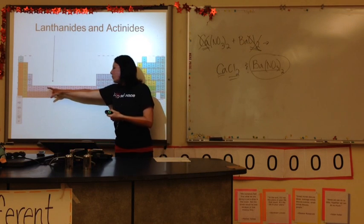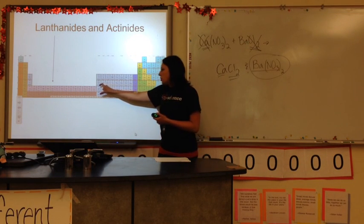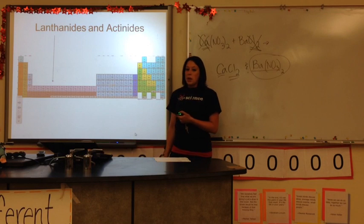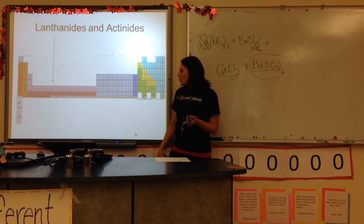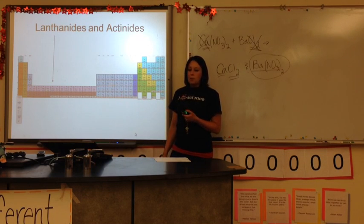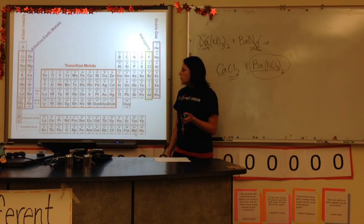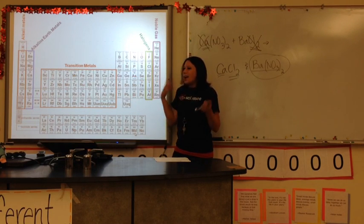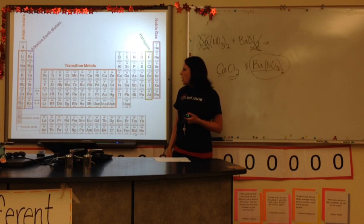Here's what the periodic table would look like if you actually inserted those two rows from the bottom into where they should be. It would take up a lot of space in classrooms across the world, so it's a lot handier to cut them out and put them on the bottom. We've talked about all the different parts besides these groups right here, which are kind of a mishmash of metals and nonmetals and metalloids.